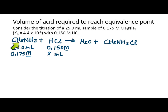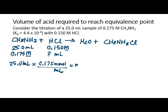At the equivalence point, the moles of base are equal to the moles of acid. So, how many moles of base do we have in this solution? We have 25 milliliters at 0.175 moles per liter — or 0.175 millimoles per milliliter — so that gives us millimoles of base, which equals moles of base. At the equivalence point, moles of base equals moles of acid. So: 25 times 0.175 equals 4.375 millimoles.